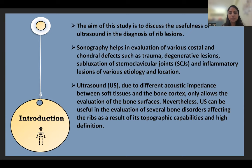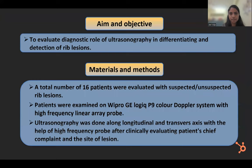Ultrasound, due to its different acoustic impedance between soft tissue and bone cortex, only allows the evaluation of bone surfaces. Ultrasonography can be useful in the evaluation of several bone disorders affecting the ribs due to its topographic capability and high definition. The aim and objective of this study is to evaluate the diagnostic role of ultrasonography in differentiating and detecting rib lesions.